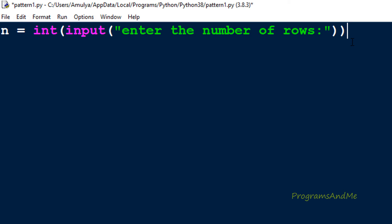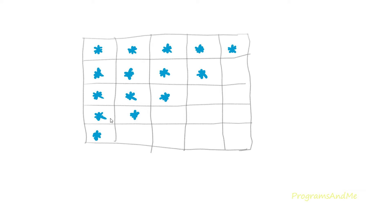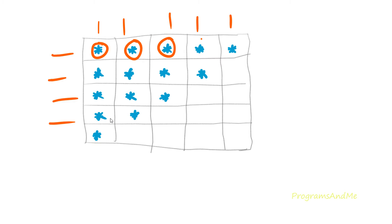Now we are done with the input; next we need to write the program. We are using nested for loop — that means a for loop inside a for loop. One for loop is to print stars in different rows and another for loop is to print stars in different columns.